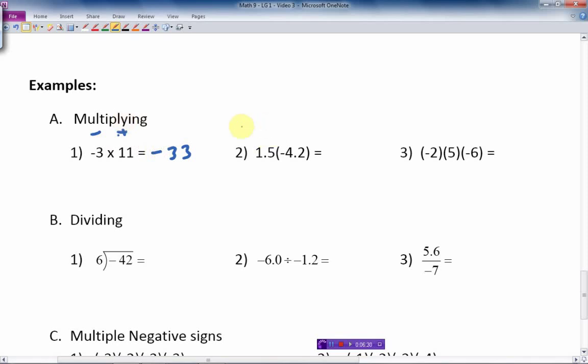Same with the next. We have a positive and a negative. So we multiply those two together. We end up getting a negative answer. So we end up getting 1.5 times 4.2, I believe is 6.3. And it's going to be negative. Because positive times a negative is a negative. Different signs.